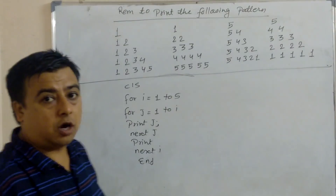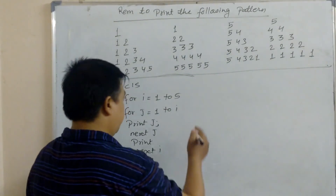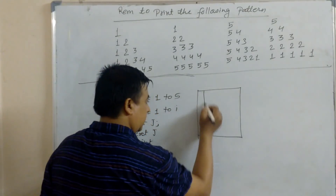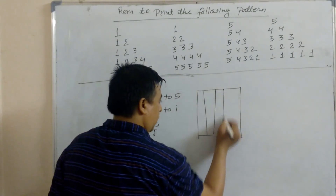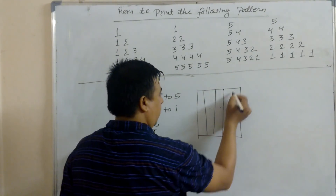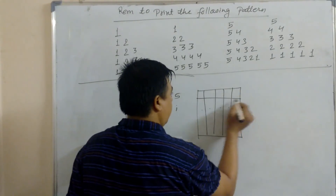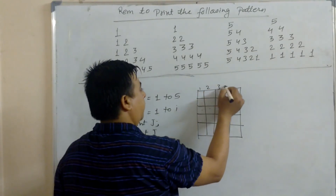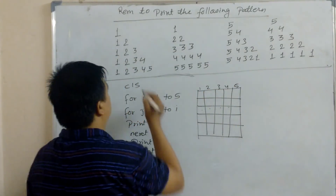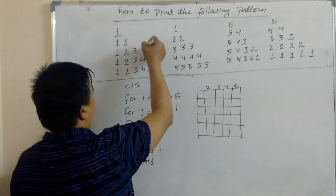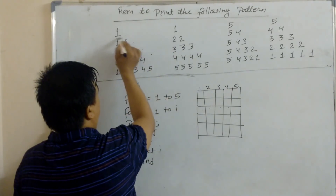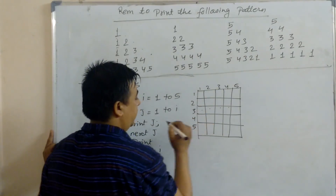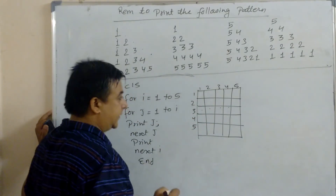I'll show how it works using a row and column format. I'll draw 5 columns: 1, 2, 3, 4, 5. And I'll draw 5 rows: 1, 2, 3, 4, 5. These are the 5 columns and 5 rows. Now let's see how the program works.